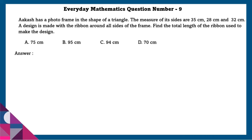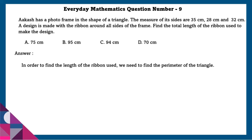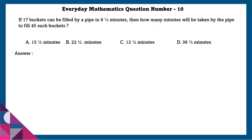Question 9: Akash has a photo frame in the shape of a triangle. The measures of its sides are 35 cm, 28 cm, and 32 cm. A design is made with ribbon around all the sides of the frame. Find the total length of the ribbon used. To find the length of ribbon used, we find the perimeter of the triangle. Perimeter equals sum of all sides, which is 95 centimeters.